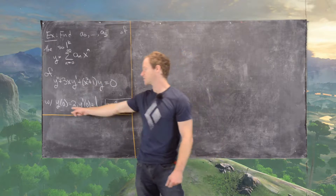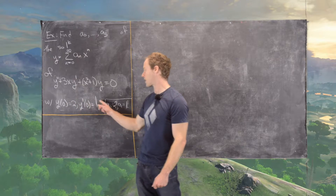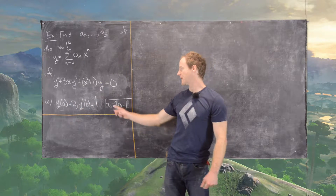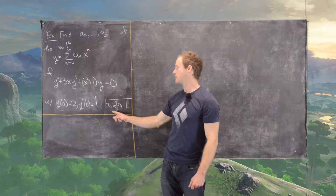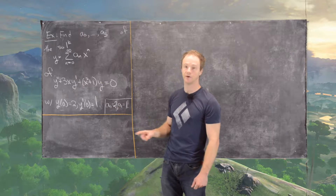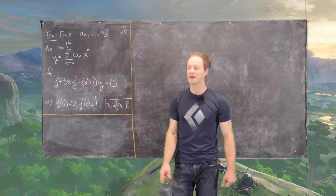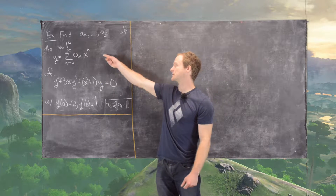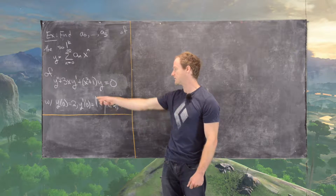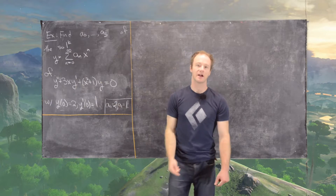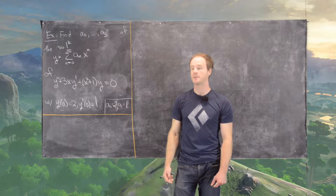We've got initial conditions y(0) = 2 and y'(0) = 1. That tells us that the first coefficient of the series a0 will be 2, and the second term a1 will be 1. That's because if you plug 0 into the series, everything collapses down to a0, which needs to be 2, and likewise if you take the derivative and plug in 0.